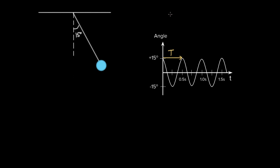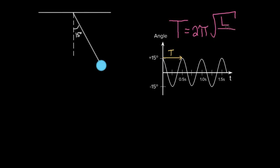To derive the formula for the period of a pendulum you would need calculus, so I'm just going to write it down and compare it with the period formula for a mass on a spring. The period of a pendulum equals two pi times the square root of the ratio of the length of the pendulum L — the length of that string — divided by G, the gravitational acceleration of the planet the pendulum is being used on.